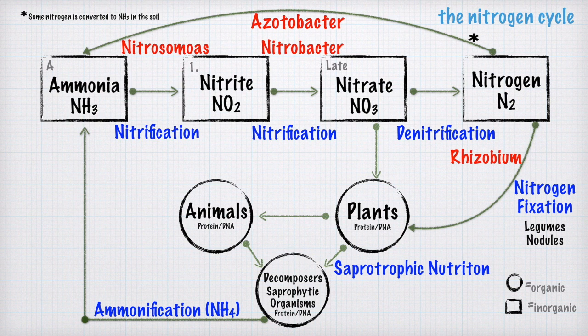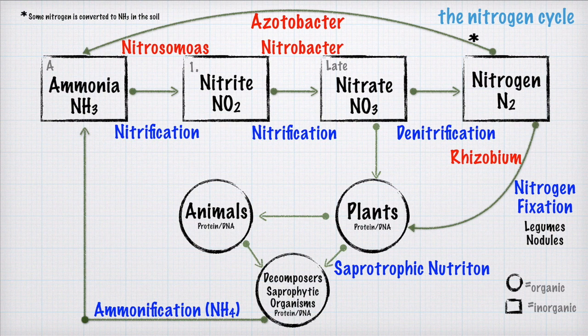I hope this has helped you and simplified it to some degree. Remember all the inorganics — those squares in a row. Then remember your circles, which are the organisms in the organic layer. Remember all the processes, and do not forget the guys that make it all happen: bacteria. I hope this has helped you. We'll see you in the lab.